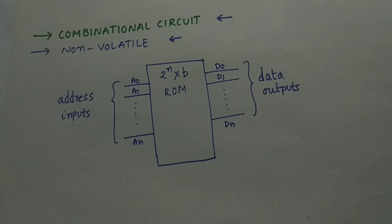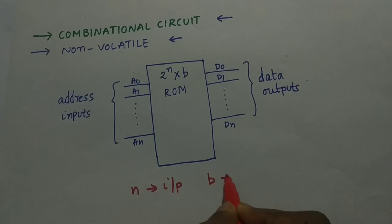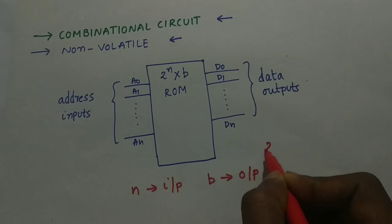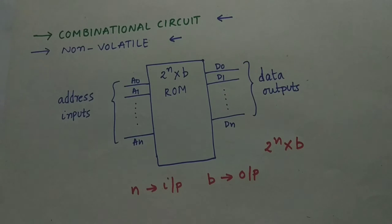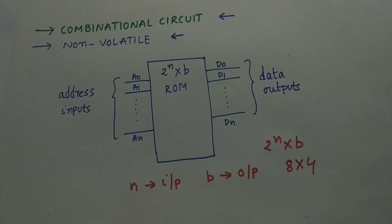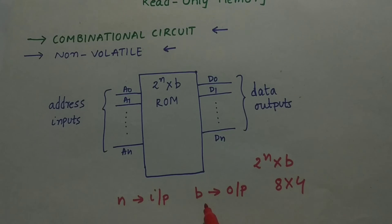So the relation between the inputs and outputs that if we give n inputs, n inputs are being given and suppose say b outputs are there, then we have to construct a ROM of size 2 power n cross b. Let's say our n is 3 inputs, we are giving 3 inputs and the output is of 4, then we will get 8 cross 4 ROM. ROM stores the truth table of n inputs and b outputs combinational function inside it.